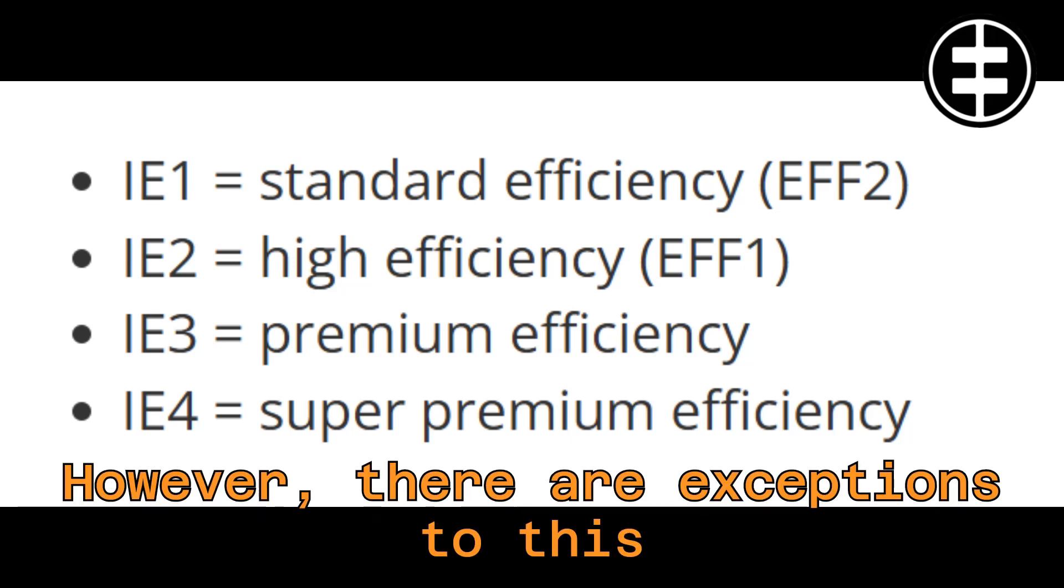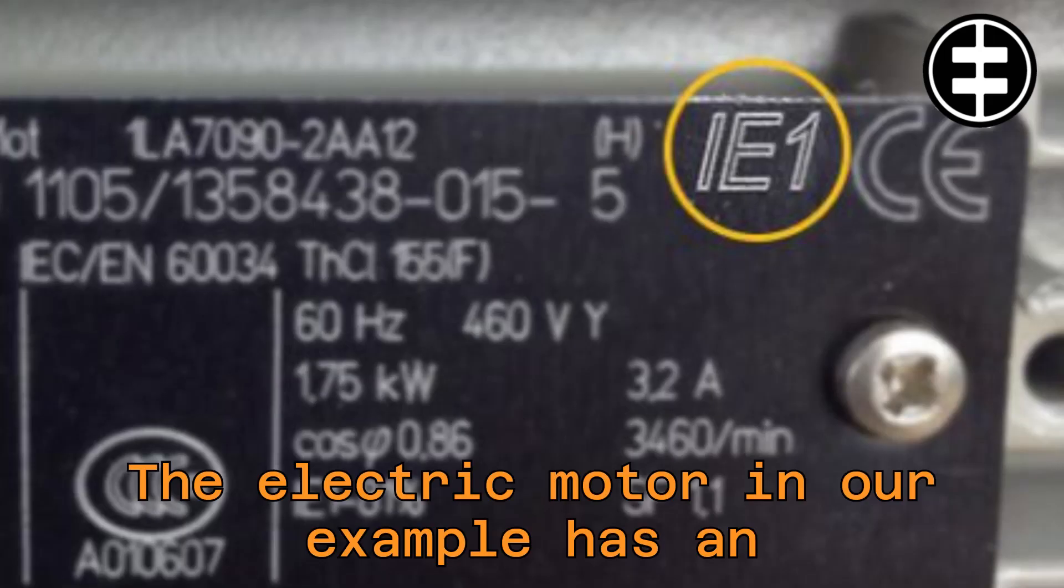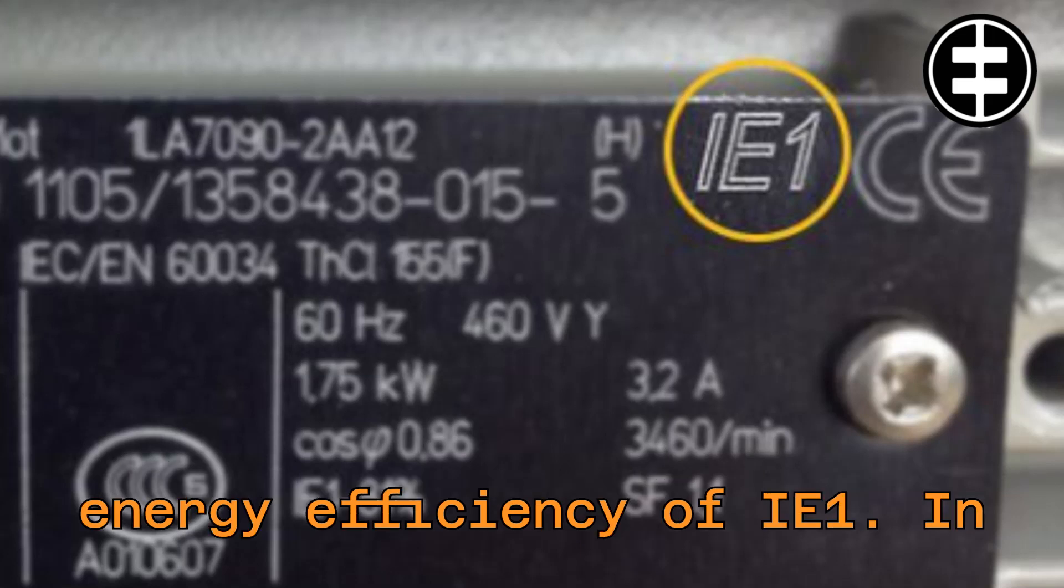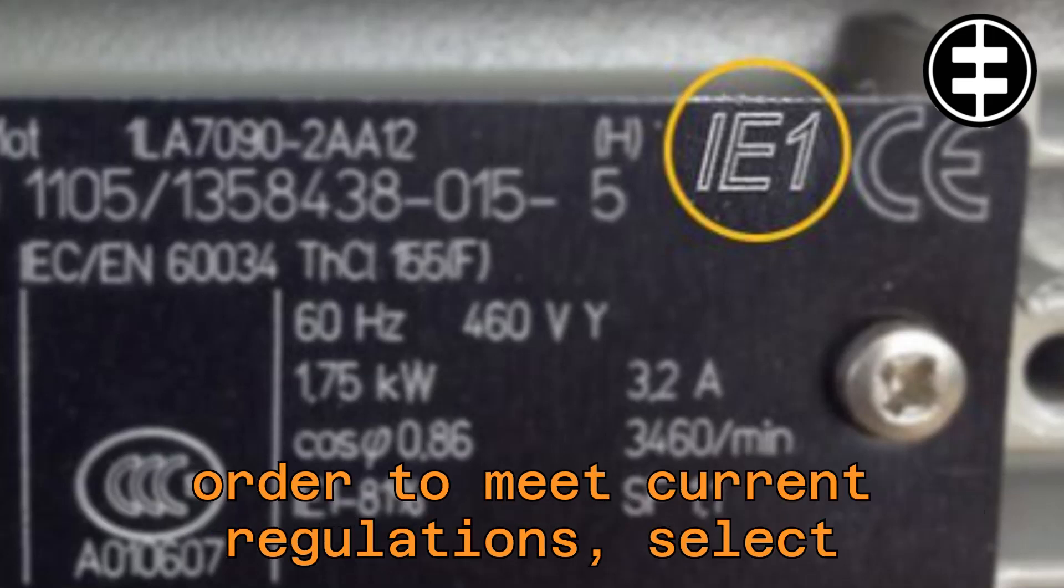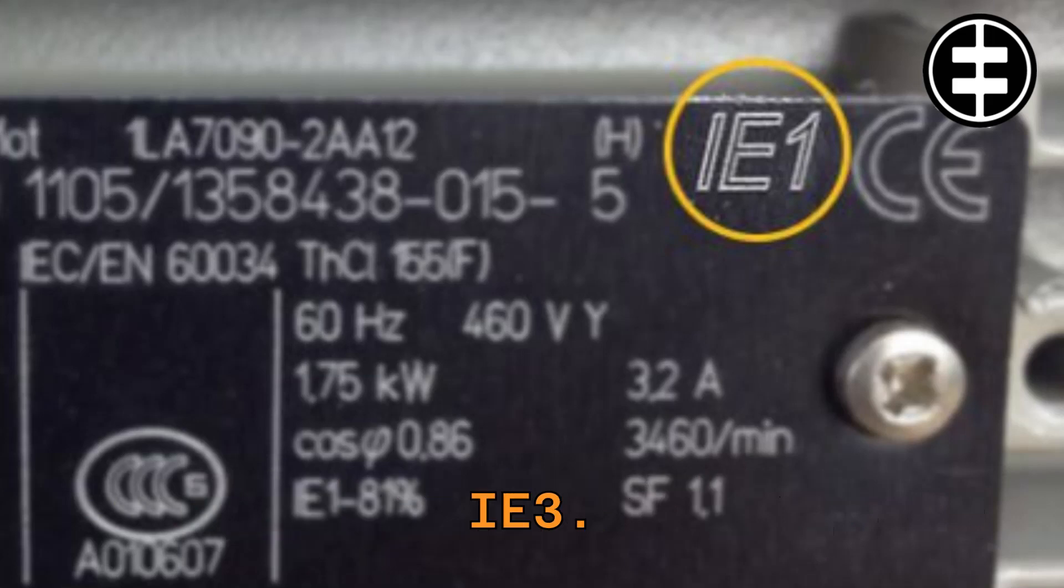However, there are exceptions to this rule. The electric motor in our example has an energy efficiency of IE1. In order to meet current regulations, select IE3.